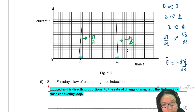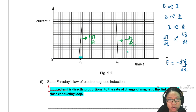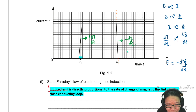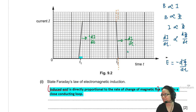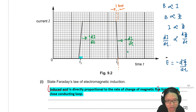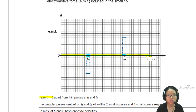Wait — is T2 only one small square? Yes, this one is half a box, and this one is half a box. So here to here is technically one box. If this is one box, the rate of change is faster — twice as fast. So this reading has to be double whatever you drew previously.